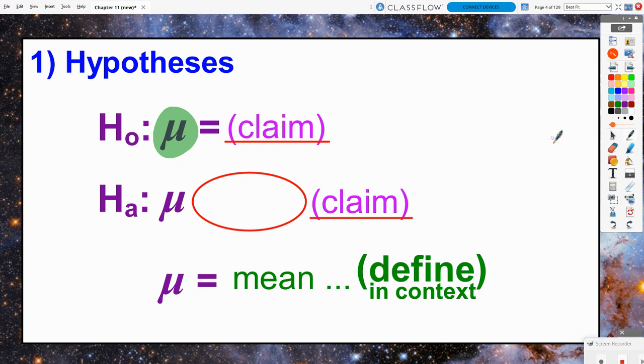Our null hypothesis for a one sample problem is going to be that mu is equal to some claimed value, versus alternatively that mu is one of three possibilities: either going to be greater than, less than, or not equal to that same claimed value. And like always, we need to define in context what does our parameter mu represent here - the mean what, specifically.